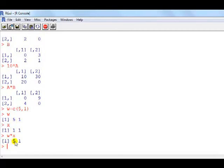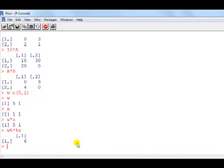And what if we use the percent operator instead to multiply the two vectors? Well, you find that this gives us the inner product: 5 times 1 plus 1 times 1 equals 6.